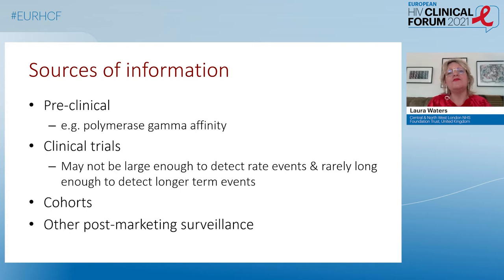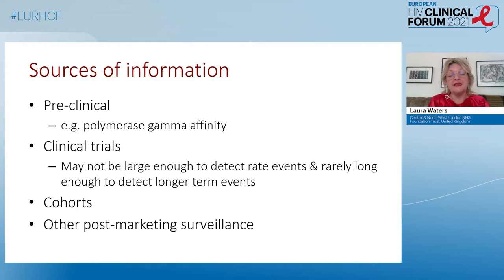Where can we get our information on toxicity? We can garner information from preclinical studies. For example, thinking about older NRTIs and their impact on mitochondrial toxicity, modern drugs are studied in terms of polymerase gamma affinity — that's the enzyme whose binding of NRTIs drives mitochondrial toxicity — and that preclinical information can help give us some idea of what future toxicities may be. Clinical trials are essential, but they may not be large enough to detect rare events, and they rarely are undertaken long enough to detect longer-term adverse events, which is where cohorts come in.